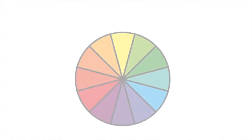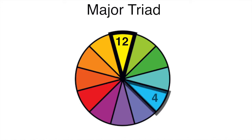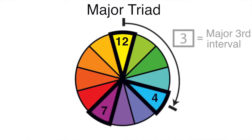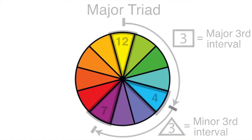In order to spell a major triad, there is an interval sequence that is used: it is a major third interval followed by a minor third interval, as shown by the pie chart.